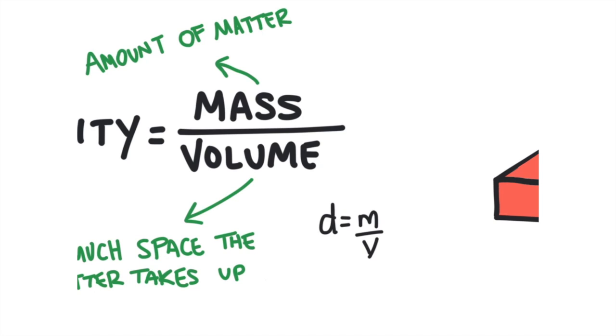In chemistry, mass is usually measured in units of grams, and volume is usually measured in units of milliliters, or centimeters cubed. Milliliters and centimeters cubed are the same thing. One milliliter is one centimeter cubed. Milliliter is used for liquids, and centimeters cubed is used for solids.